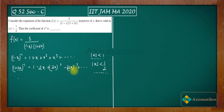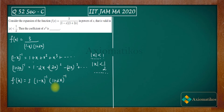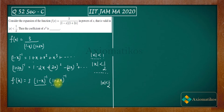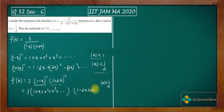Now we write out both series. For (1 - x)⁻¹: 1 + x + x² + x³ + ... and for (1 + 2x)⁻¹: 1 - 2x + 2²x² - 2³x³ + 2⁴x⁴ + ... We only need terms up to x⁴ since we are looking for the coefficient of x⁴ in the product.